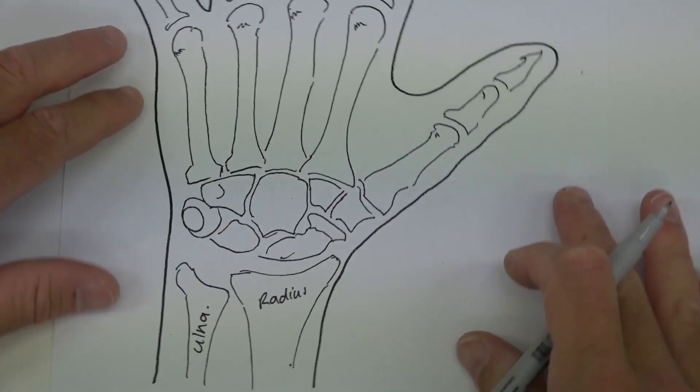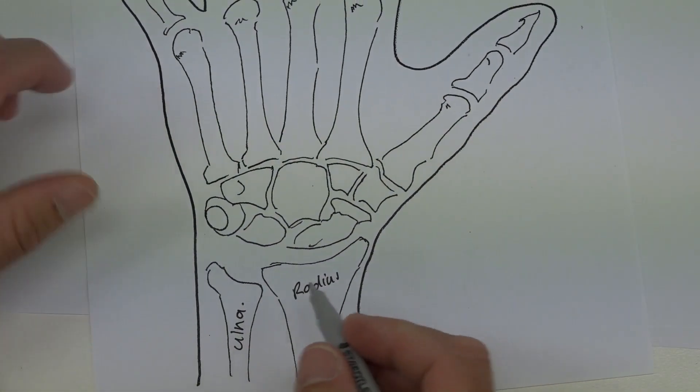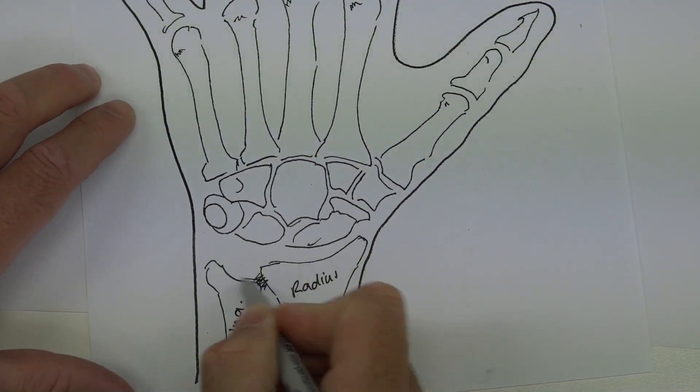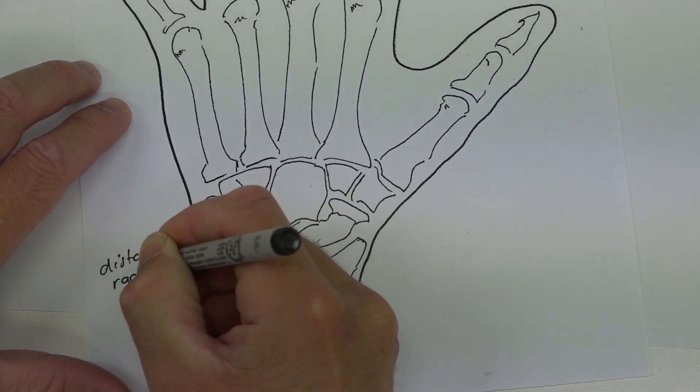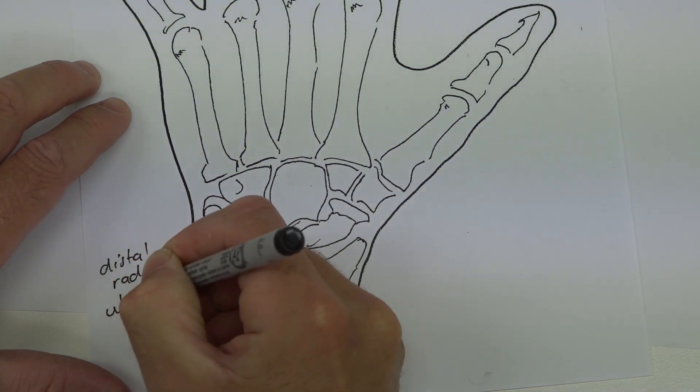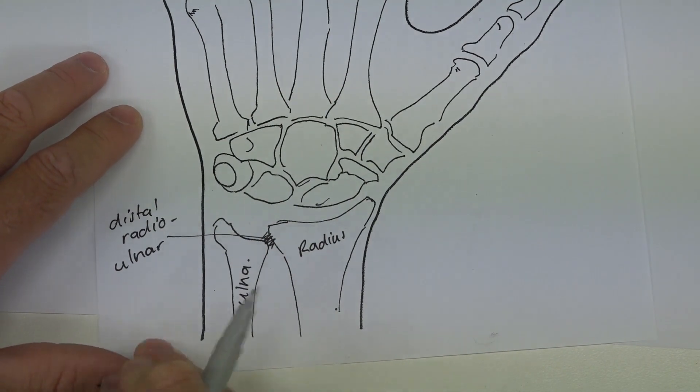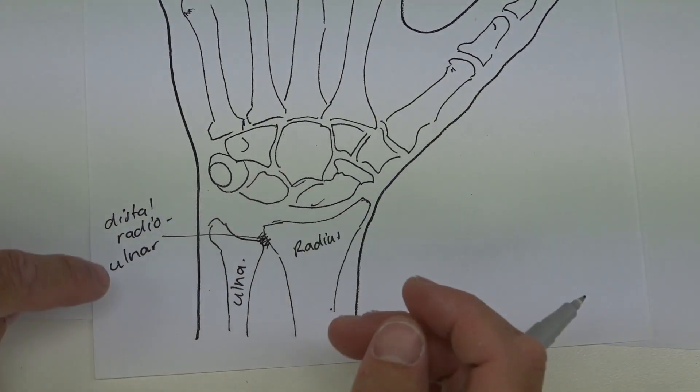Here you would have the ulna. Any time you see a joint like this, you can put them together and call this the distal radioulnar. You could describe that from what we did before—it's a pivot type joint and it's the radius which is moving around there.